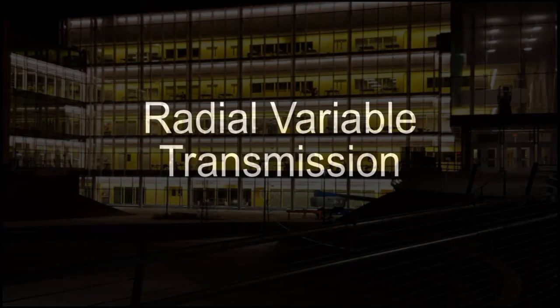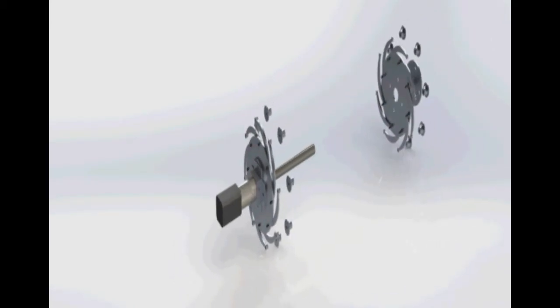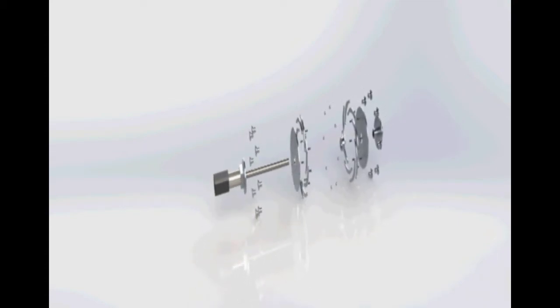Introducing the Radial Variable Transmission, or the RVT. The RVT mechanism is comprised of two discs connected using angled linkages. These angled linkages are fixed to the disc at one end and connected with the use of a pin at the other end.